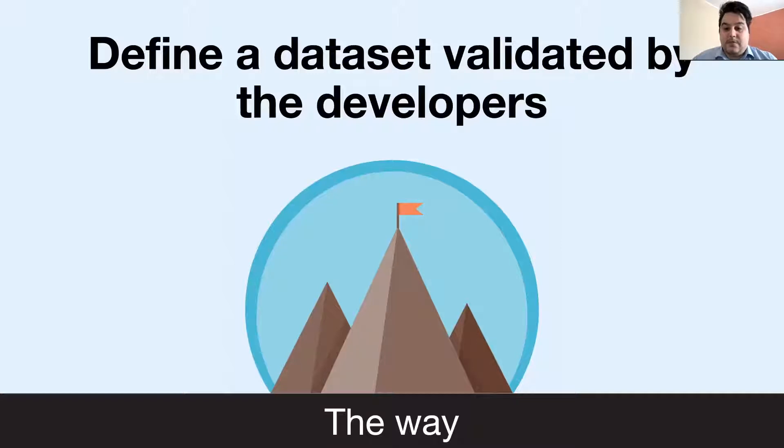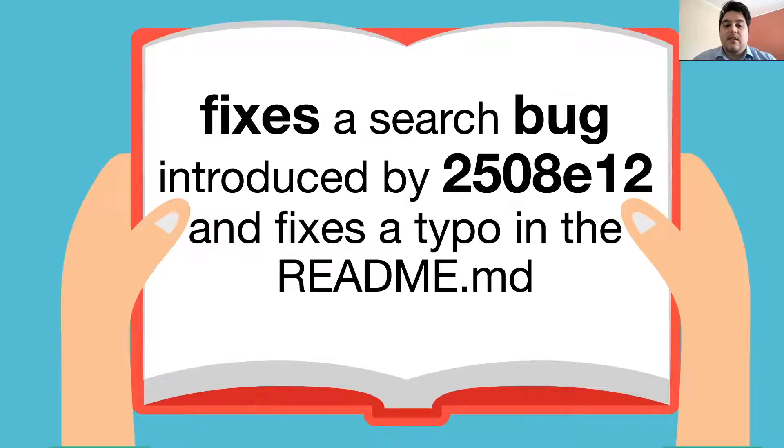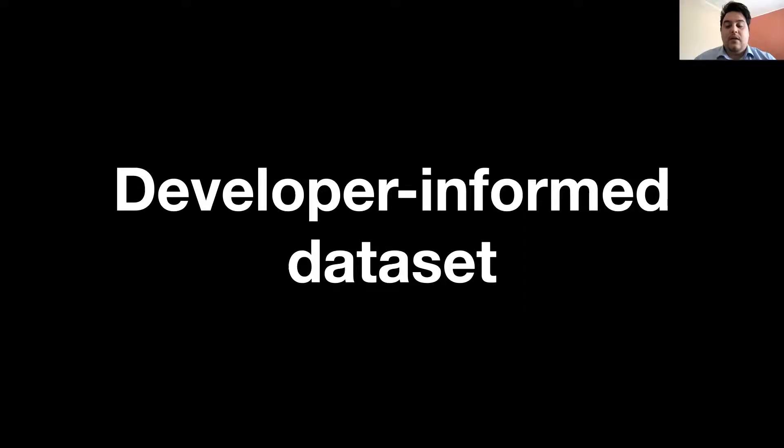So, a possible solution to this problem can be to define a dataset validated by the developers. In fact, looking at the commit messages, we notice that in some cases, developers who fix a bug also report information about the commit that introduced the bug. In this way, the idea is to build a developer-informed dataset using the information given by the developers.